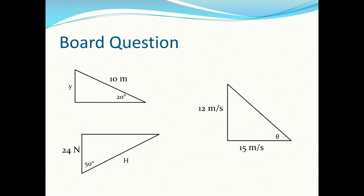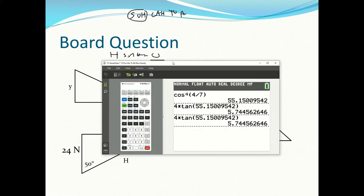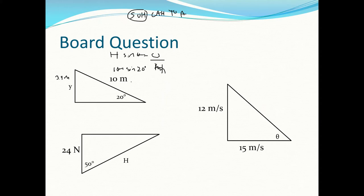Now you try three practice problems: find y, find an angle, and find a hypotenuse. For the first one, we have opposite and hypotenuse, so we use sine: sin θ = opposite/hypotenuse. Rearranging gives opposite = hypotenuse × sin θ = 10 × sin(20°) = 3.4 meters (two significant figures).